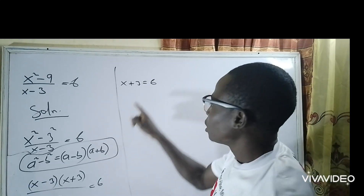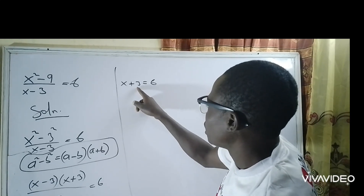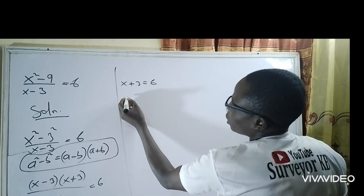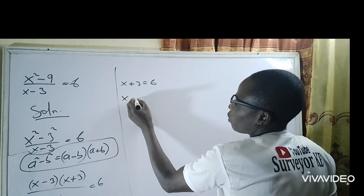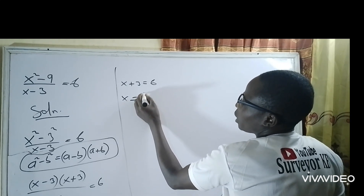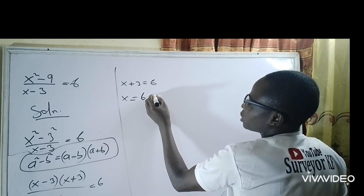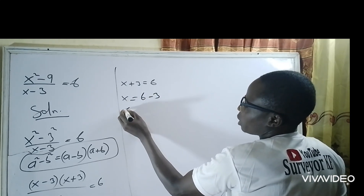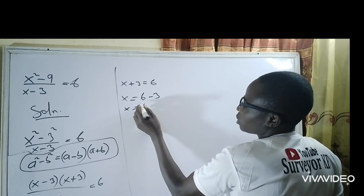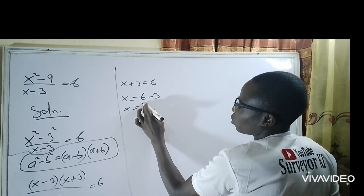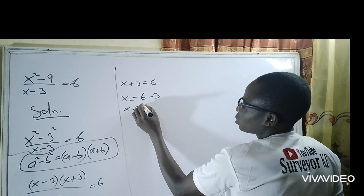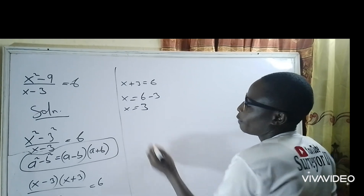I am looking for x. The 3 will cross over, so x is equal to 6 minus 3, and x is equal to 3.